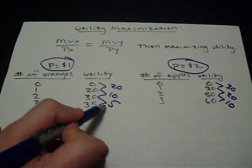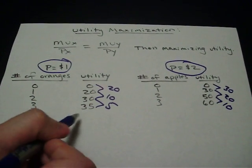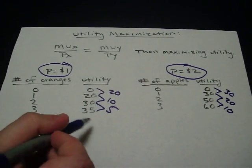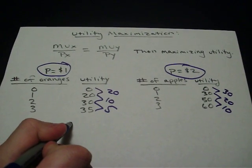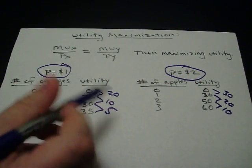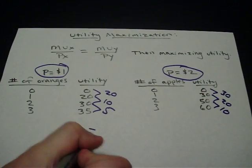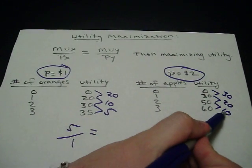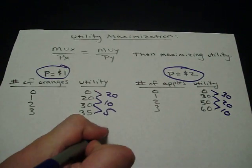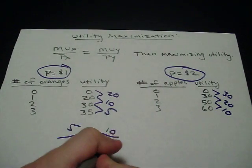Here we get 5 units of utility, additional units of utility as we consume the last one. That will be the marginal utility of product X over the price of that product, which is $1. If that equals out the last bit of marginal utility that we get from consuming this product, which is 10, over the price of that product, which is $2.